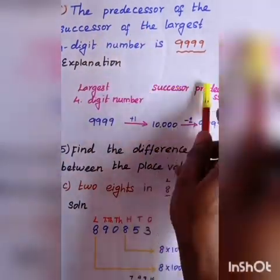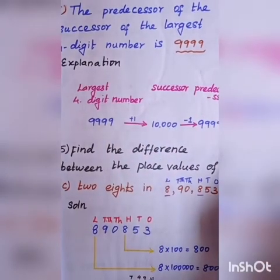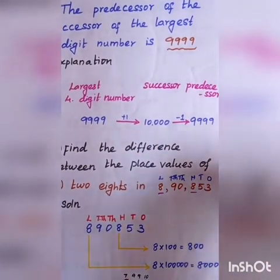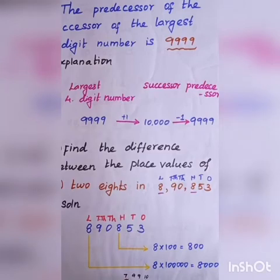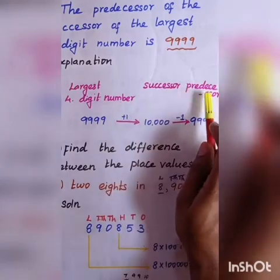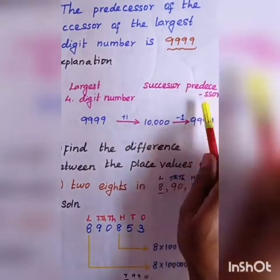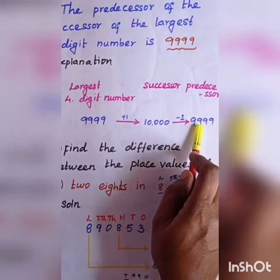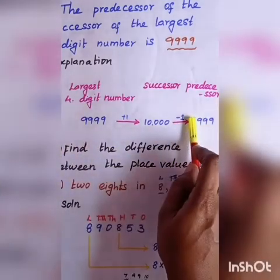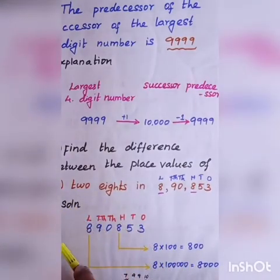Now, the predecessor of 10,000. Predecessor means minus 1 — it is the number that comes before. Successor is after, predecessor is before. So 10,000 minus 1 gives us 9,999. That is the answer — the predecessor of the successor of the largest 4-digit number is 9,999, which is the largest 4-digit number again.